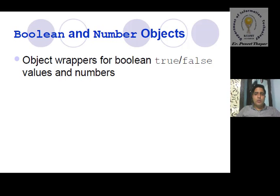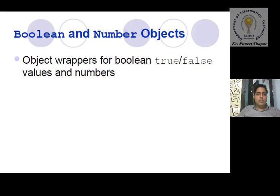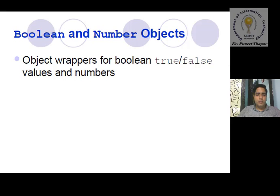Good afternoon everyone. Today's topic is based on JavaScript Boolean and Number objects. Boolean is an object used for true/false purposes, and Number is a numbering object used for entering numbers like 0, 2, 9, or any combination. The object wrapper for Boolean holds true and false values, and for Number it holds only a number.